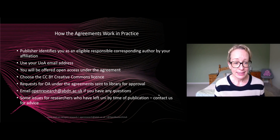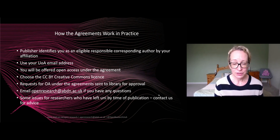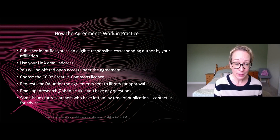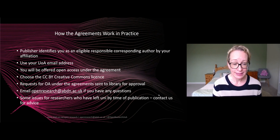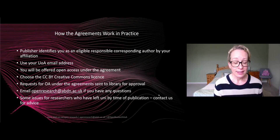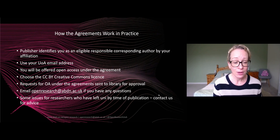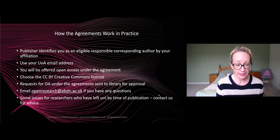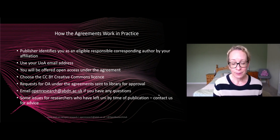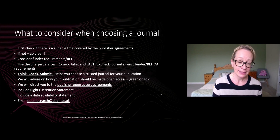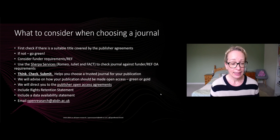In practice, the publisher will identify you as eligible by your affiliation. You need to be the corresponding author and use your university email address wherever possible, and you will be offered open access under the agreement. Just follow the instructions, make sure you choose the CC BY Creative Commons license — especially if you have research funding that requires it. Some requests are sent to the library for approval; some are automatic. We are aware there are some issues for postgraduates who have carried out research at the university but come to publish later — the Open Research team will advise you on publishing via open access agreements, using a rights retention statement, and any other questions. Just get in touch at the Open Research email.